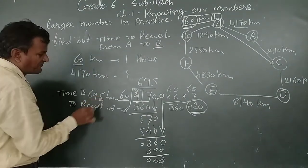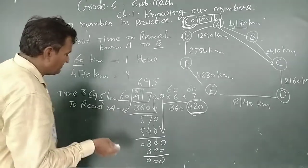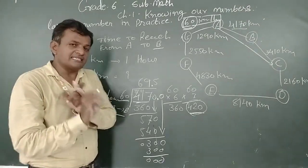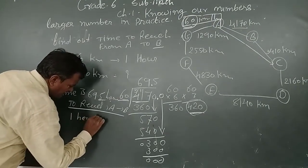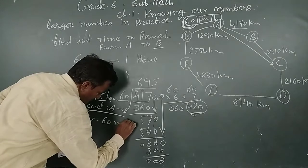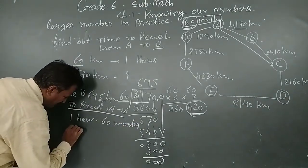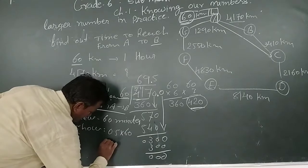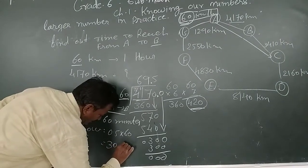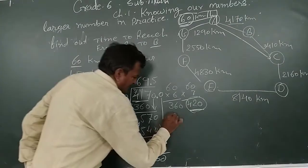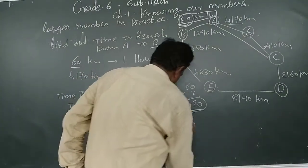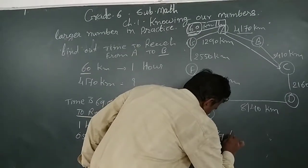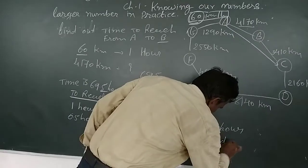We write 0.5 hours in minutes. We know 1 hour means 60 minutes, so 0.5 hours equals 0.5 into 60, which is 30 minutes. Therefore the total time is 69 hours and 30 minutes.